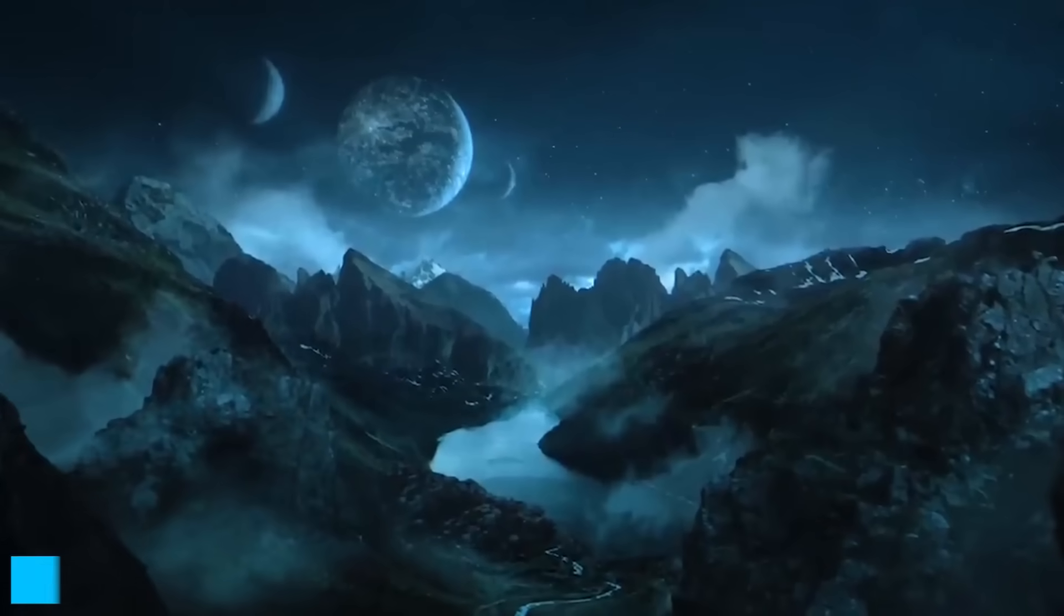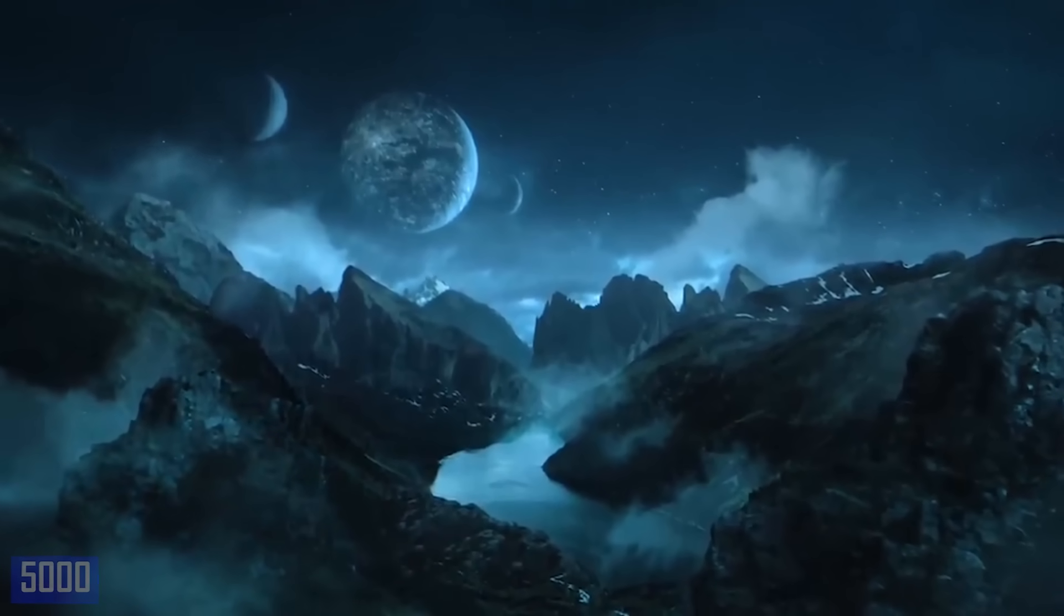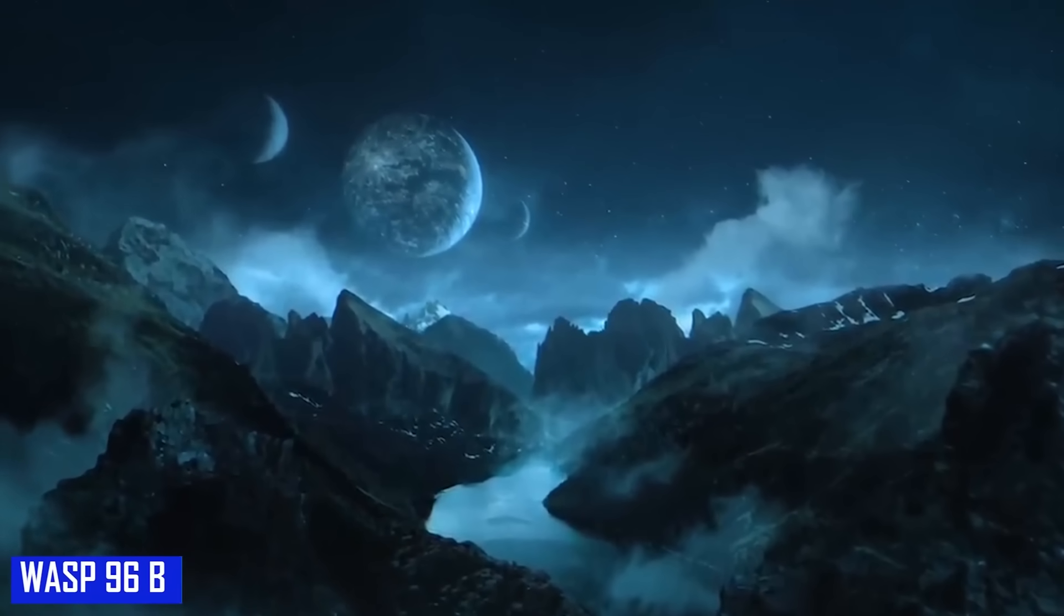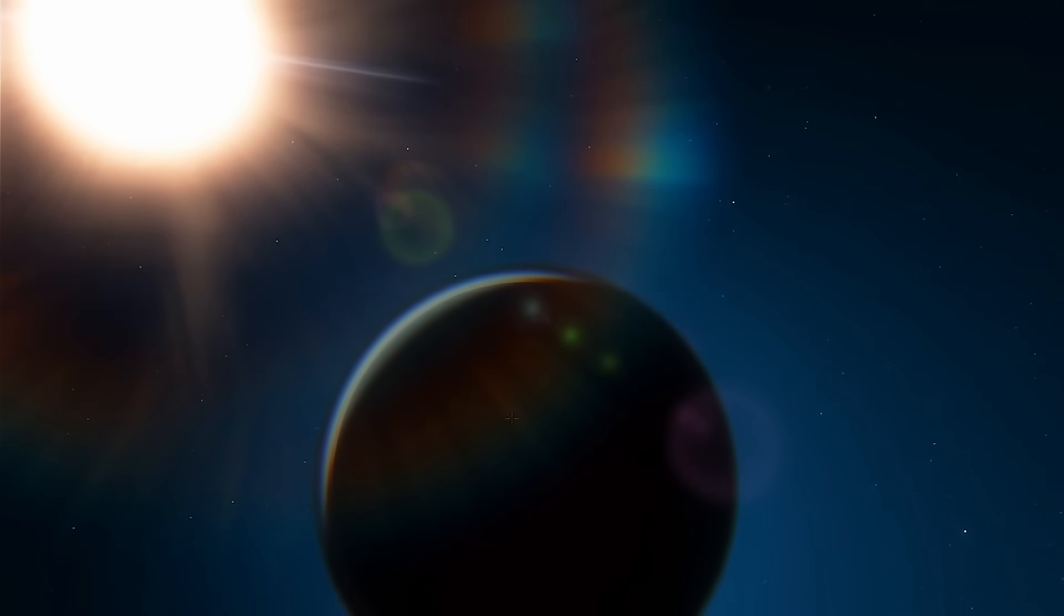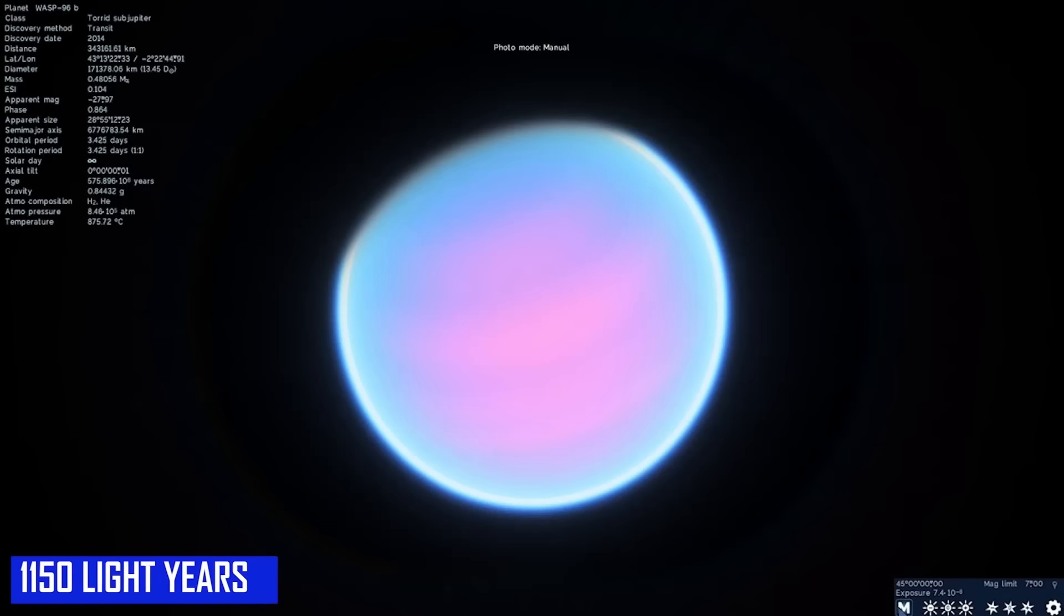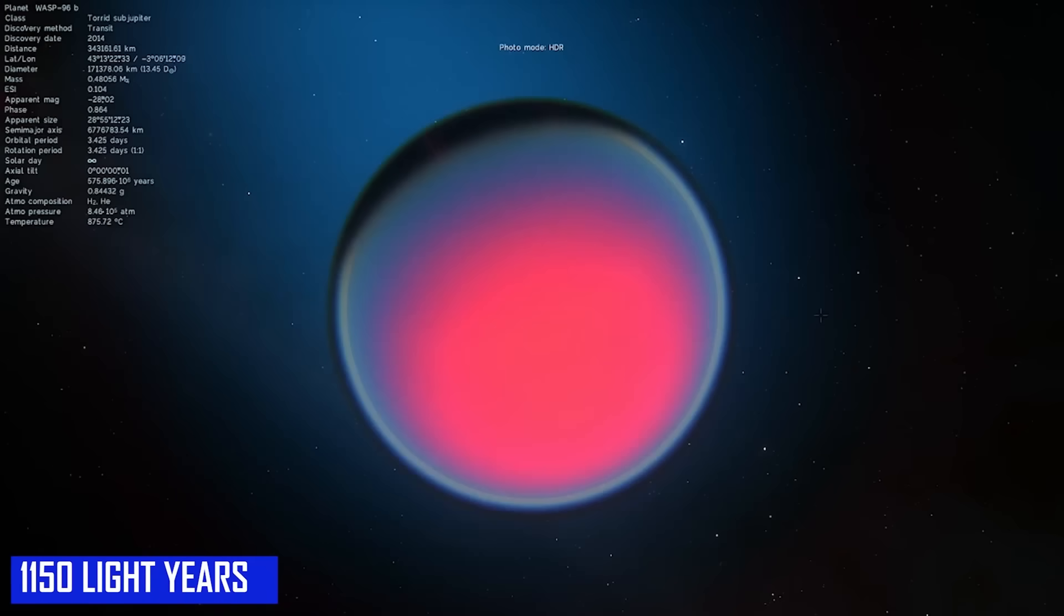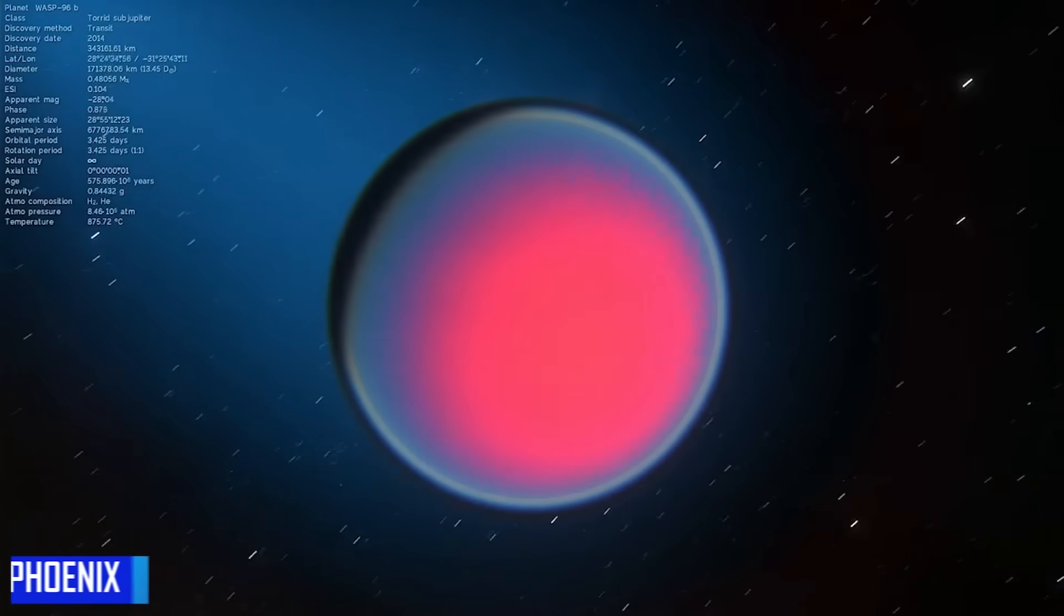There are more than 5,000 confirmed exoplanets in the Milky Way, including WASP-96b. It represents a type of gas giant that has no direct counterpart in our solar system and is roughly 1,150 light-years away in the southern sky constellation Phoenix.